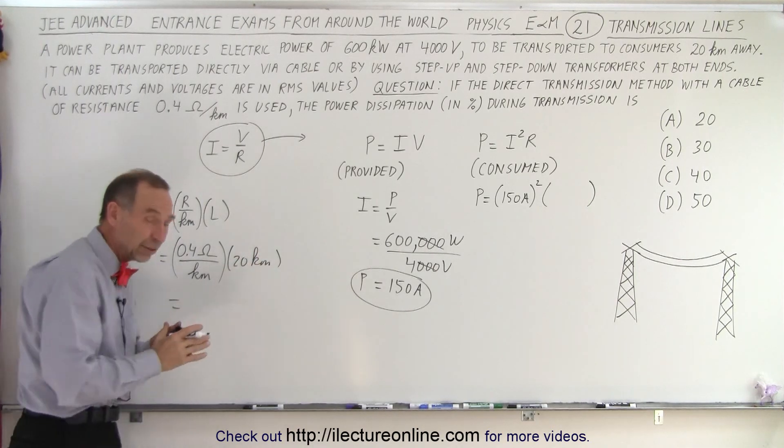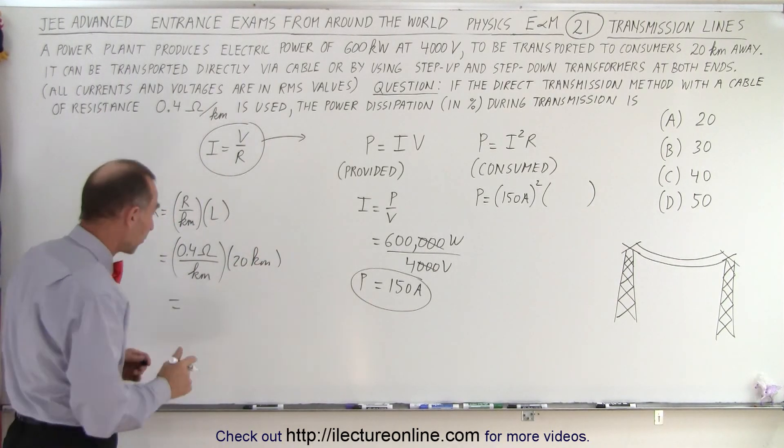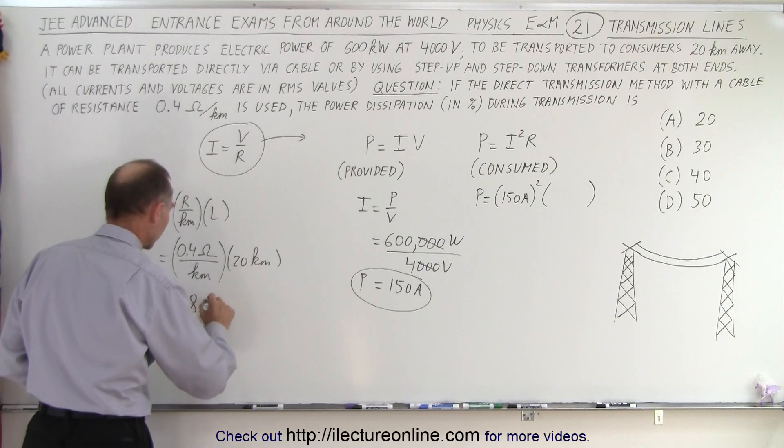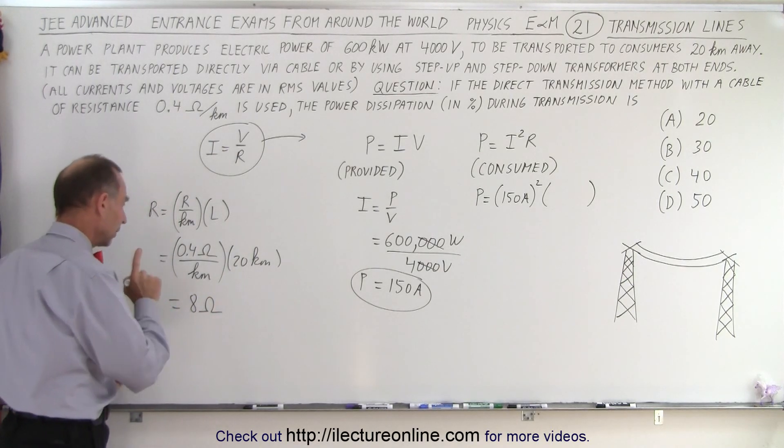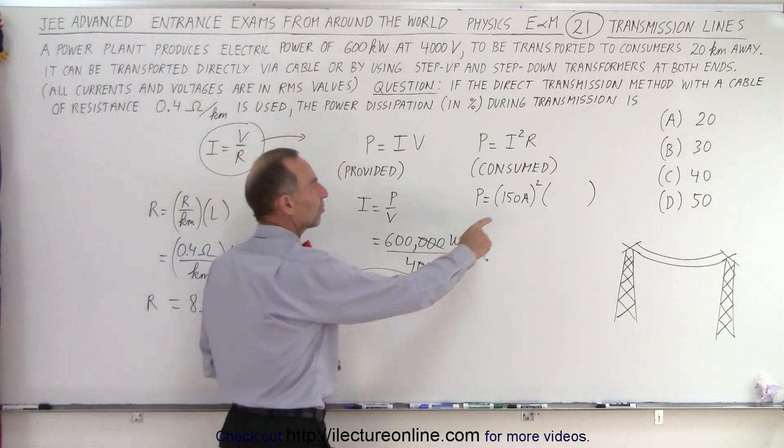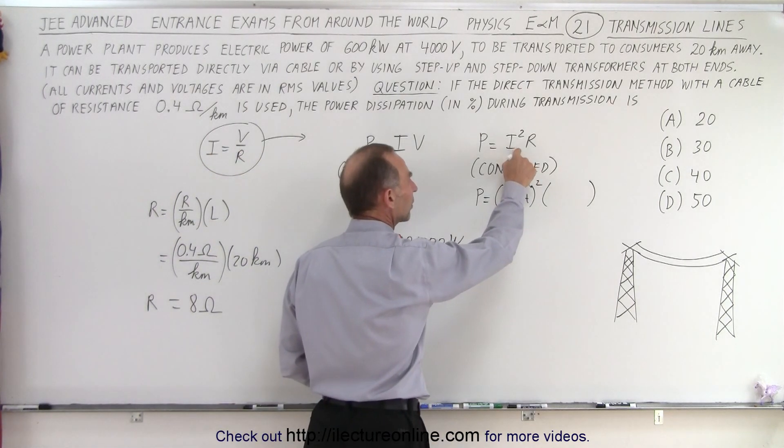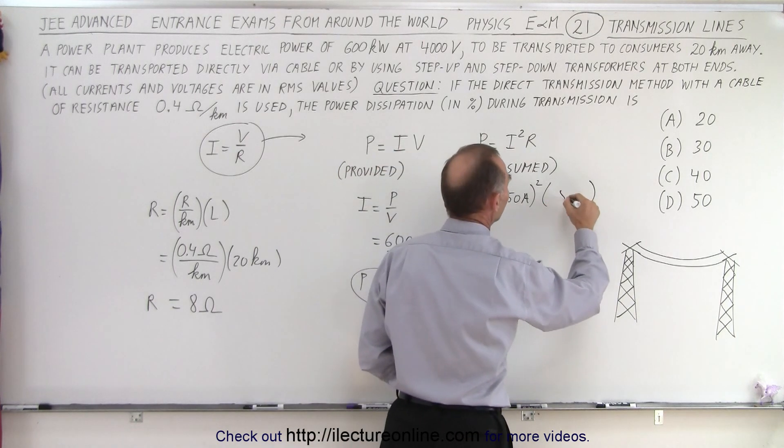So in this case, that is 0.4 ohms for one kilometer, and we're going to multiply times 20 kilometers. That means that over the length of 20 kilometers, the cables have a resistance of 8 ohms. Now you say, well, 8 ohms, that's not very much. Why are you worried? Well the problem is, the current is very high, and you have to square it, so that makes that a very big number, times 8.